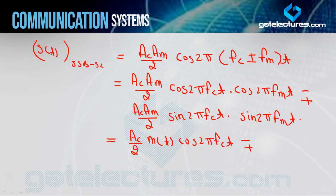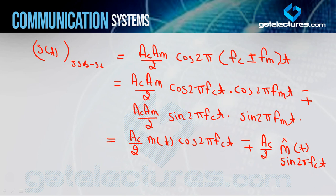Toh is doosre term ko hum represent karte hain Ac/2 · m̂(t) · sin(2π·fc·t). Basically m̂(t) kya hai? m(t) = Am·cos(2π·fm·t), toh m̂(t) = Am·sin(2π·fm·t). That means m̂(t) represent karta hai m(t) ka 90 degree phase shifted version. Toh m(t) se m̂(t) kaise banaya jata hai — ise hum discuss karenge Hilbert transform ko consider karke. Toh mein yahan equation number 1 yahi par stop kar raha hun.